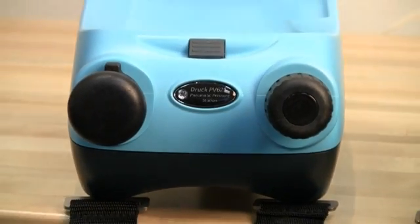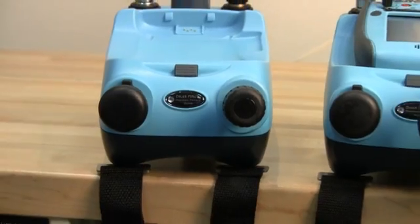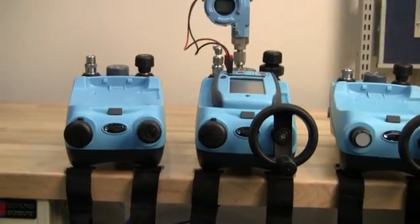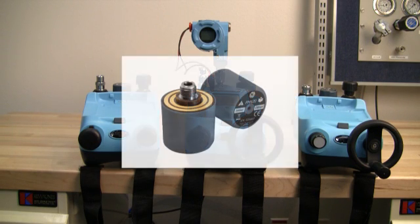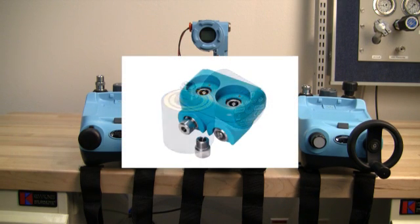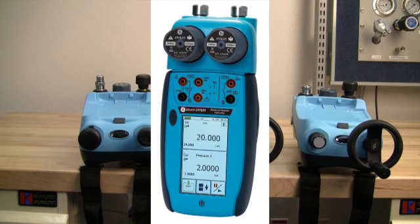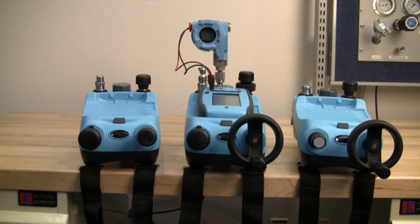Based on a modular design, the DPI620 can be easily rearranged in use, adapted by application, and expanded over time. Interchangeable pressure modules, a module carrier, along with pneumatic and hydraulic pressure stations, provide unparalleled flexibility for measuring and generating pressure in the shop or in the field.